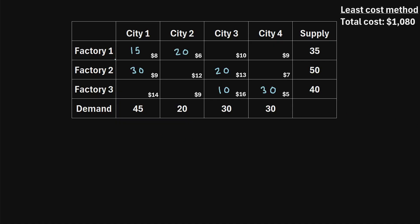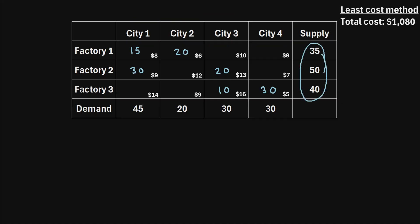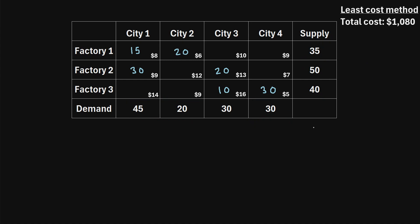Let's say we have a transportation problem where we have three factories that produce some good, and we have four cities that have a demand for that good. Our total supply, if you add up all the supply values, is 125. And if you add up the total demand values, that's also 125. So this is an example of a balanced transportation problem where the demand equals the supply. The idea is that we want to fulfill the demand of each city, but we want to do so by minimizing the shipping costs.